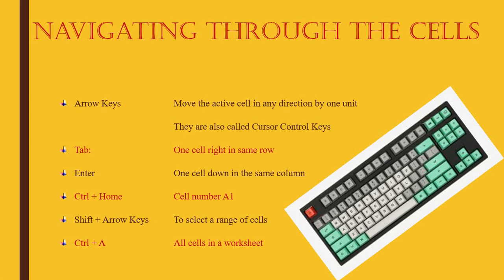Navigating through the cells — navigate means move around. How will you move around among so many cells? You can use the arrow keys: the right arrow to go to the right side, the left arrow to go to the left side, the top arrow to go up, and the down arrow to go down. These are also called cursor control keys.